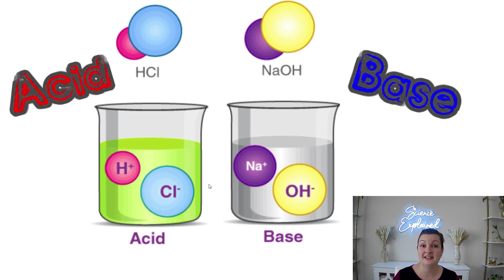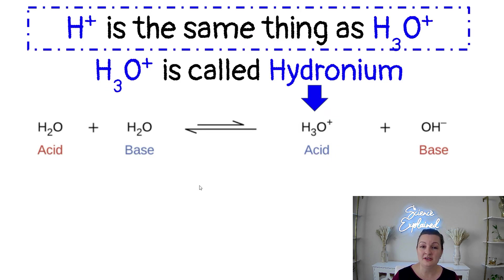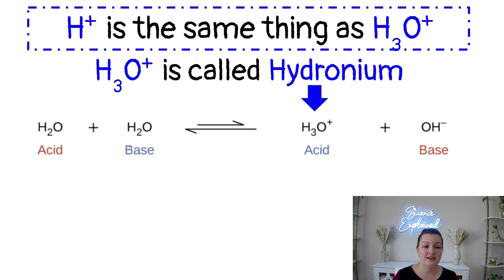It makes it really easy to tell. An H positive is the same thing as the H3O positive, which we just call hydronium. From our equation here, we have an acid plus a base and it's going to give us hydronium plus the OH negative base.